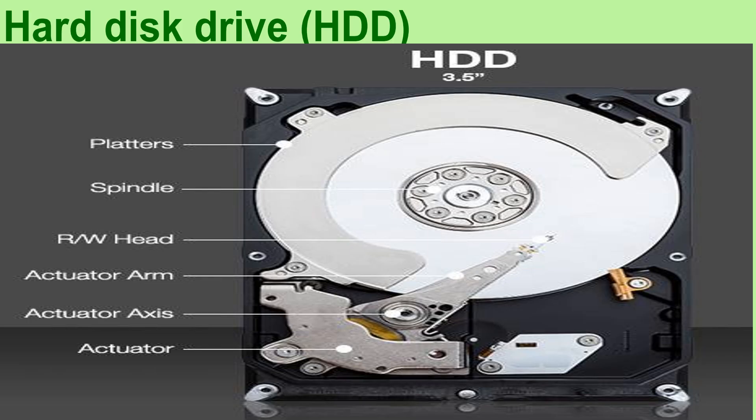Let's discuss about hard disk drive, also called as HDD. Hard disk drive is the most important drive where all the information is saved. A typical HDD consists of a spindle that holds flat circular disks, also called as platters, which hold the recorded data.